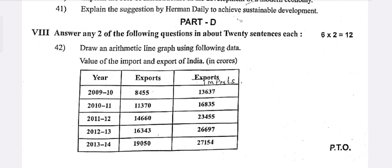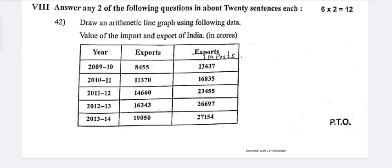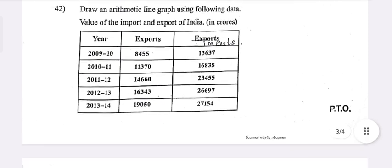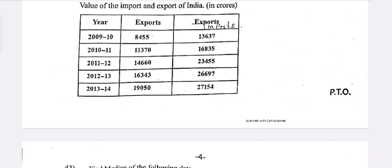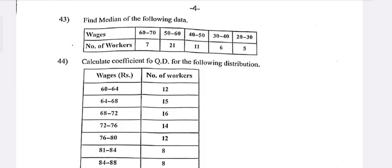What measures should be taken to achieve sustainable development? Part D: Draw an arithmetic line graph using the following data on value of imports and exports of India. Exports and imports data: 2009–10, exports 8400, imports 13,000 — see this question properly.